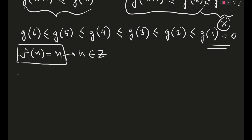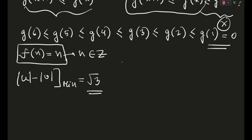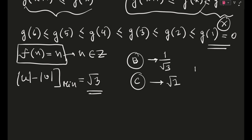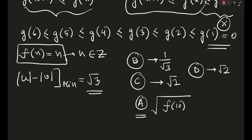We've established that the minimum value of |u| − |v| is √3 and that f(n) = n. Testing all options: option B gives 1/√3, option C gives √2, option D gives √2. Only option A, which reads √(f(10) − 7), gives √(10 − 7) = √3. So the correct answer is option A.